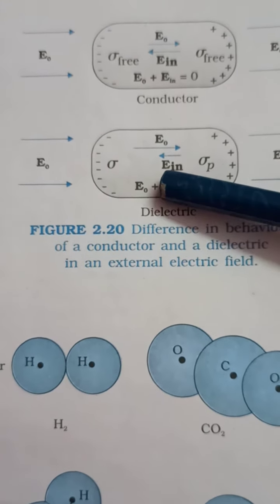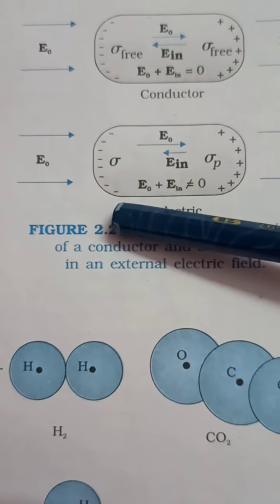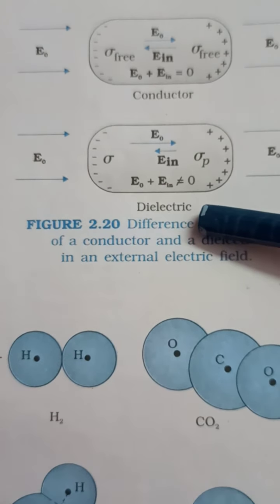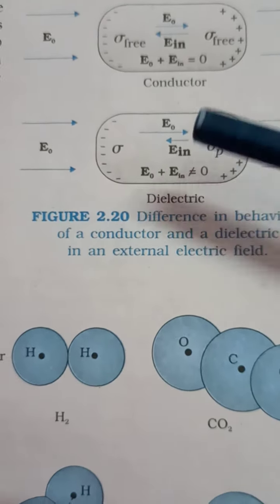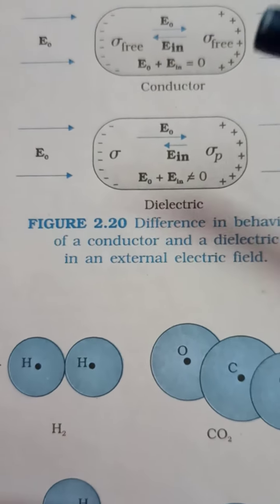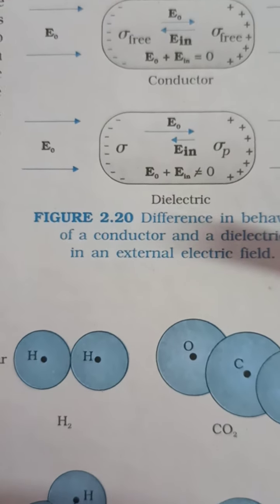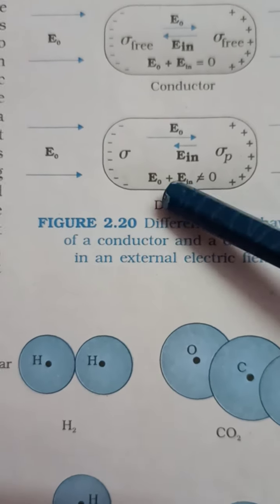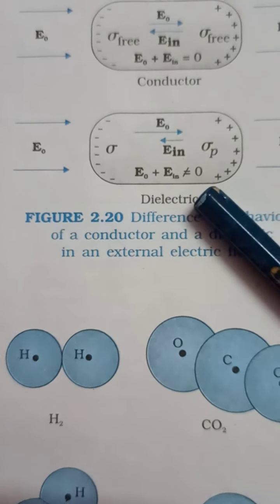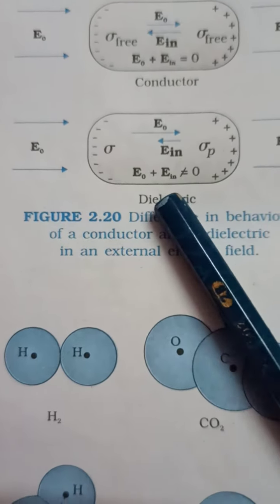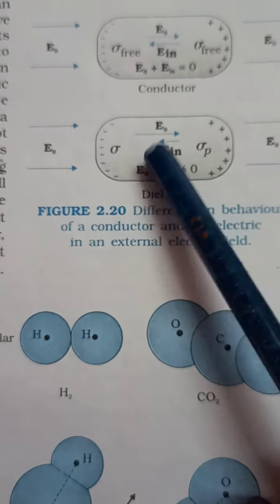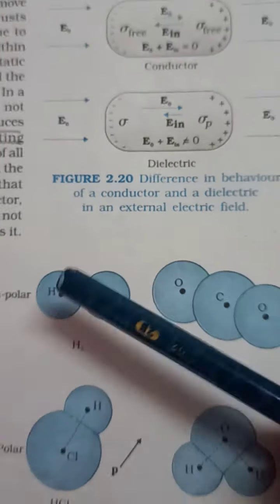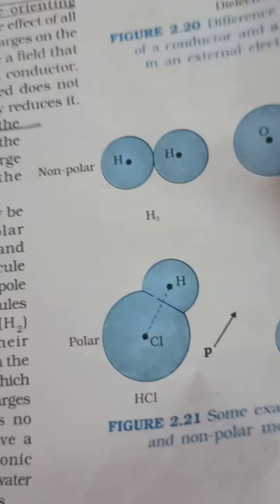That internal field sums up with the external field, but it will only reduce the external field — the two do not cancel out completely and become equal to zero. So the effect of the external field is not completely zero; it is only reduced. So if somewhere there is a field and we want to reduce its effect, we use a dielectric there.